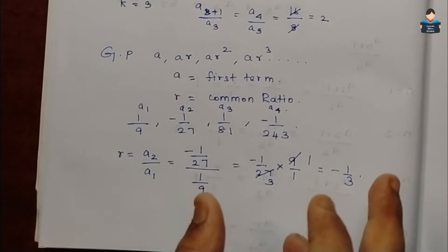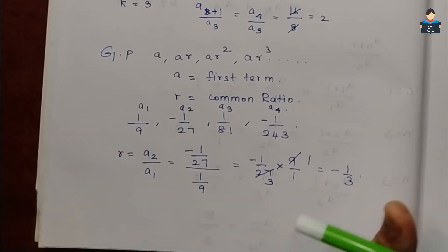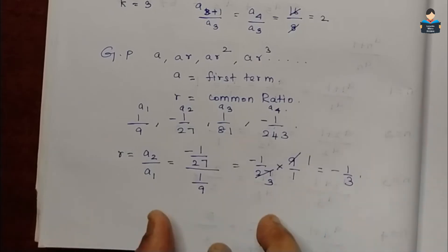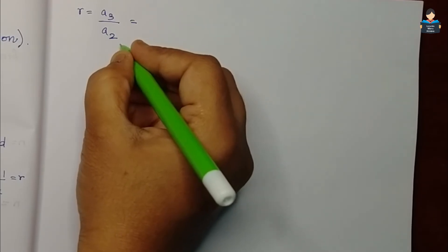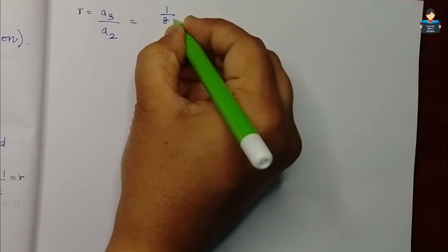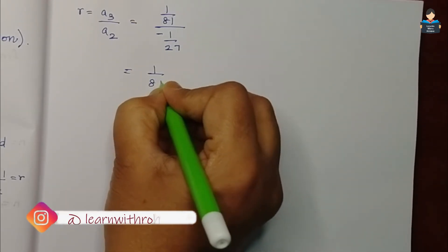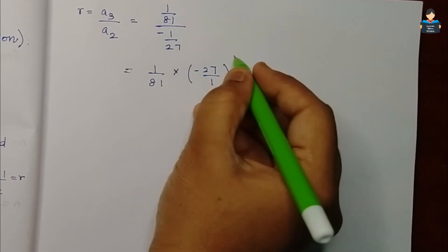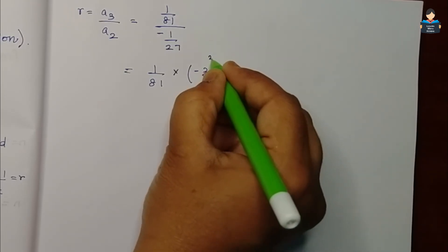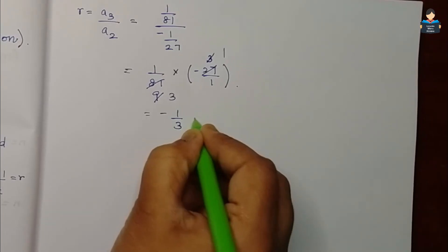Recall from the AP chapter: the same way, in geometric progression instead of subtraction for common difference, we use division for the constant ratio. Next, r value equals A3 by A2. A3 is 1/81 and A2 is minus 1/27. So 1/81 multiplied by minus 27/1 - using the 9 times tables to cancel - 9 times 9 is 81, so we get minus 1/3.